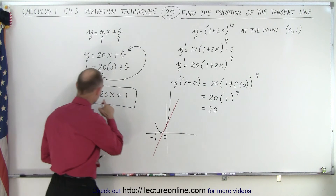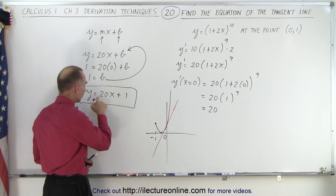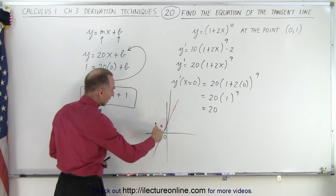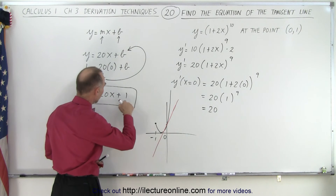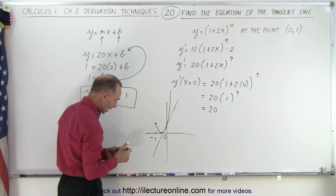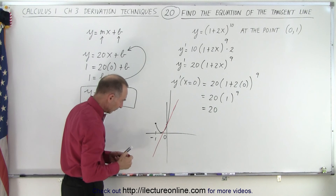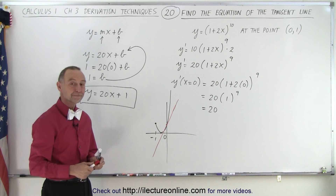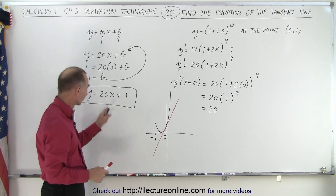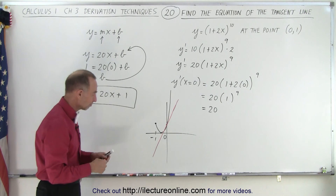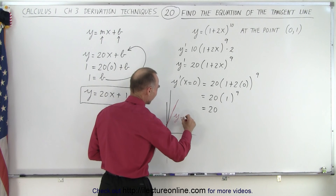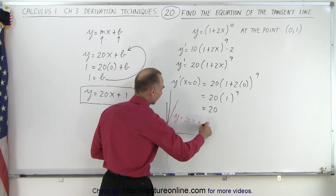And that's this function right here: y equals 20x — a very steep slope. And you can see that at that point, that's when y equals 1, which is the y-intercept of the line. So y equals 20x plus 1.